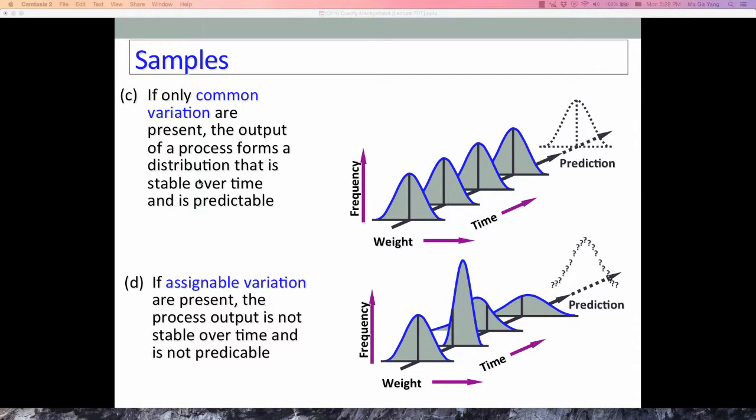Before we go to the control chart, let me revisit the variations based on the sample. There are two different types of variations. One is the common variation, which is basically present in every process. If common variation is present, the output of the process forms a distribution that is stable over time and is predictable.